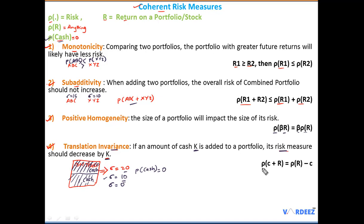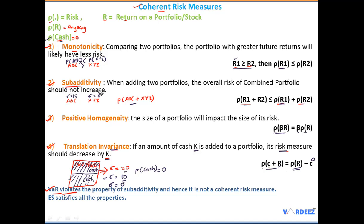Mathematically, the risk of cash plus the portfolio equals the risk of the portfolio minus the cash amount. If cash in the portfolio is zero, we just have the portfolio risk alone. If a risk measure respects all four properties, it is a coherent risk measure. VaR violates sub-additivity and is therefore not coherent, while Expected Shortfall satisfies all four properties and is coherent.